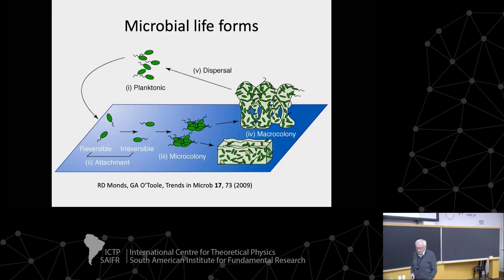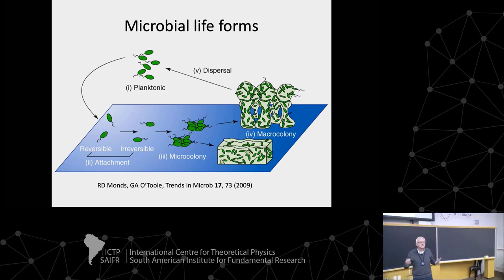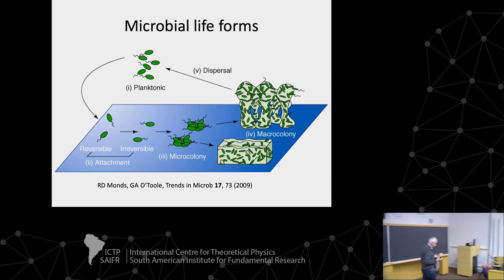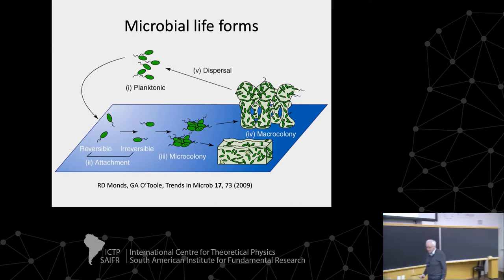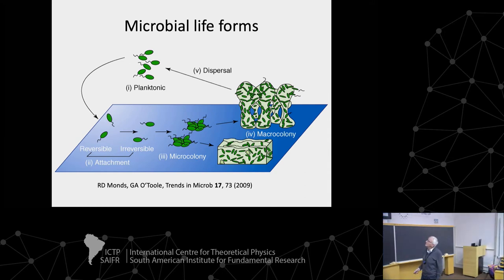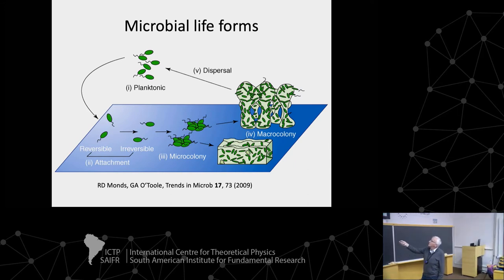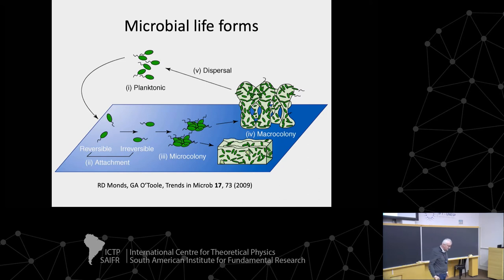If you look at the life cycle and the different forms in which bacteria appear, this is a cartoon of what you have. Up there you have what is called the planktonic lifestyle — bacteria swimming freely in liquids, typically water, sometimes with more viscous stuff around. From a statistical mechanics point of view, this is something like an active gas. You have these particles moving, and you'd like to describe the statistical properties: do they form liquid-like states, crystals, denser phases, or rafts?